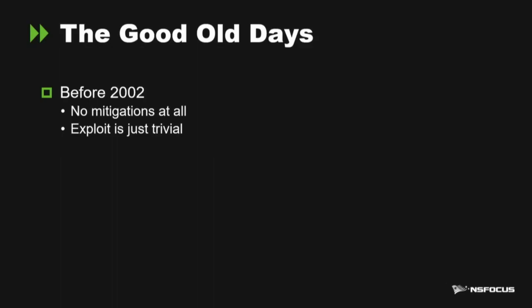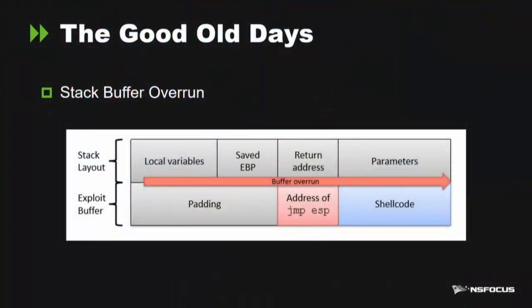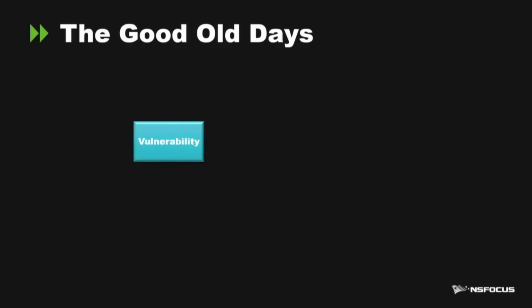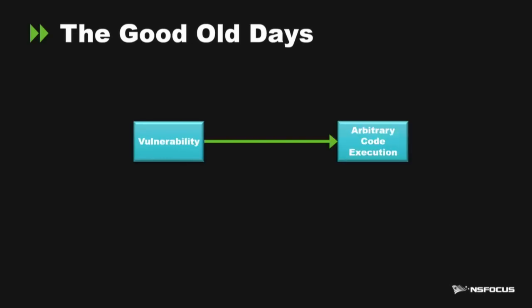Let's first review the past of mitigation bypass. Before 2002, that was the good old days of vulnerability exploitation because there were no mitigations at all, so exploiting was trivial. For stack buffer overrun, you just overwrite the return address on the stack. For heap buffer overrun, you just overwrite the heap metadata. Once you found a vulnerability, you could achieve arbitrary code execution — very simple.